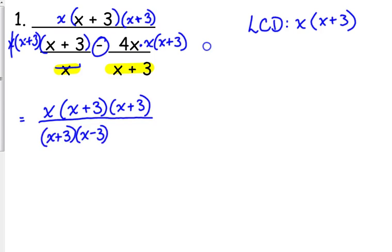Don't leave out that negative sign right there. Bring it down. And for the last term, the x plus 3's cancel, so we have 4x times x.